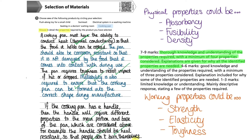When we look at the top mark band of seven to nine marks, it states we must demonstrate thorough knowledge and understanding of the properties required — which we've done. We must have used a minimum of four properties — also done. And explanations must be given for why all identified properties are needed — also achieved. If, when re-reading your answer, you feel you haven't given enough detail or identified at least four properties, go back and add more information to progress towards the full marks available.